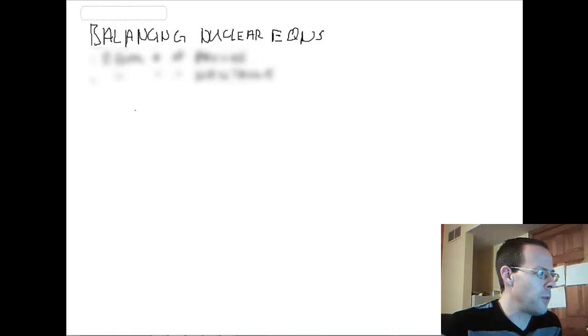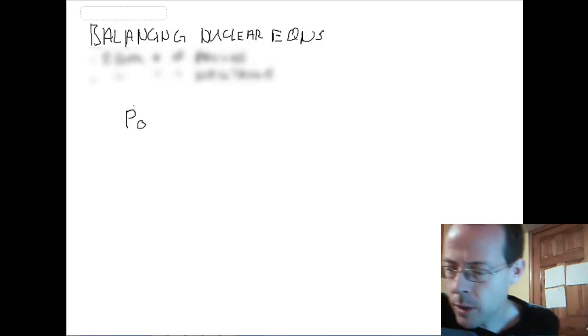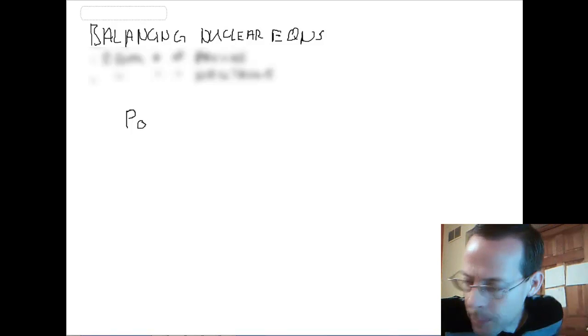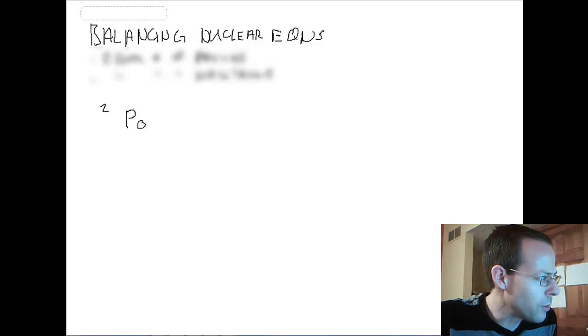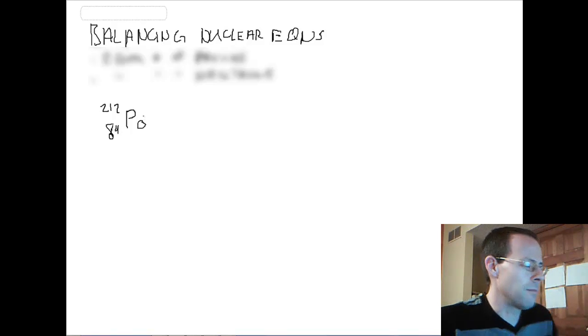The first thing we're going to do is, if we have polonium, which is a metal that's pretty far down there, it's bigger than 83, so it's radioactive. We say polonium-212, and if we look on the periodic table, we'll find that polonium is 84, so its isotope is 212. If I wanted to know the neutrons, we could take 212 minus 84, and that would give us our neutrons.